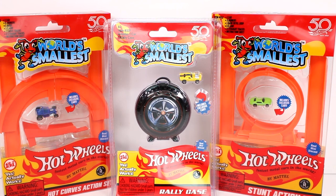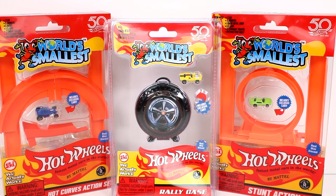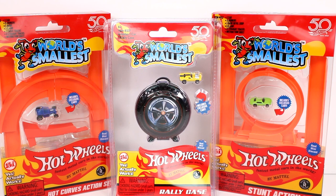We have a hot curves action set and a stunt action set. And then this one here in the middle is a rally case, so it's a tire-shaped case. You can put all your little itty bitty World's Smallest cars in them. I can't handle how cute this is right now. So cool.